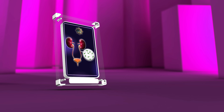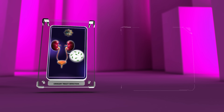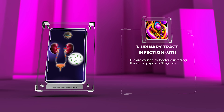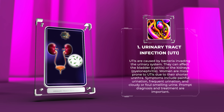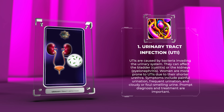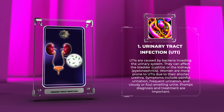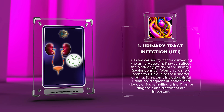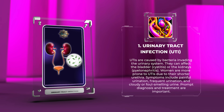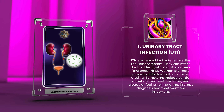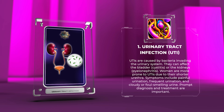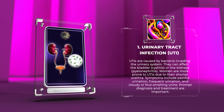UTIs are caused by bacteria invading the urinary system. They can affect the bladder — cystitis — or the kidneys — pyelonephritis. Women are more prone to UTIs due to their shorter urethra. Symptoms include painful urination, frequent urination, and cloudy or foul-smelling urine. Prompt diagnosis and treatment are important.